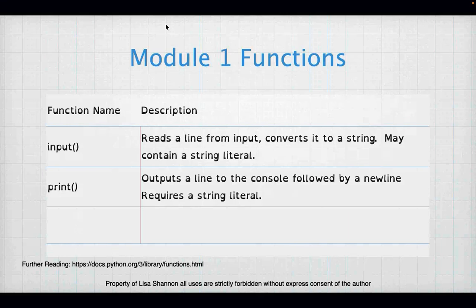We're going to learn about the input function and the print function. Input takes anything from the keyboard, makes it a string, and puts it into Python. Output does the opposite — it takes information from Python and writes it to the console, to your computer screen. All our interaction in this class with Python is via the keyboard — it's called a text-based interface.